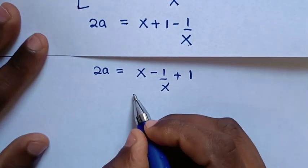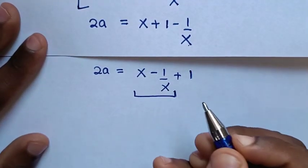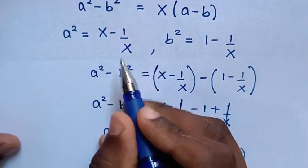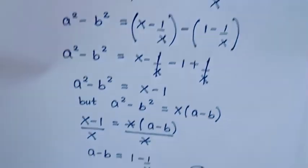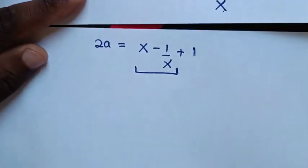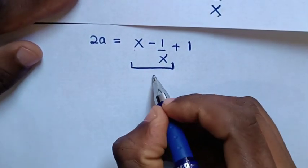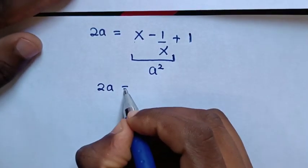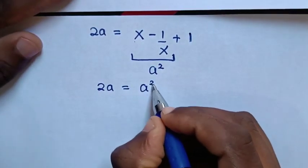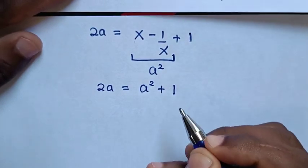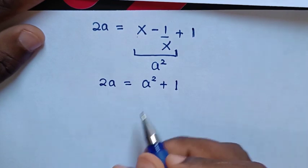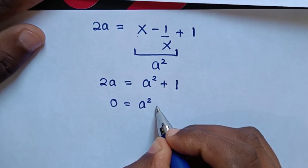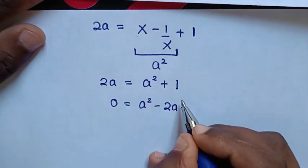So 2a equals x minus 1 over x plus 1. From our earlier work, x minus 1 over x equals a squared. Substituting this in, our equation becomes 2a equals a squared plus 1. Taking 2a to the right side gives 0 equals a squared minus 2a plus 1.